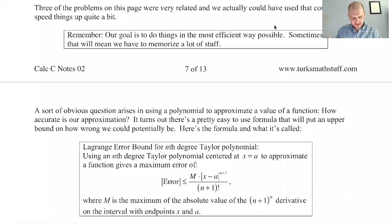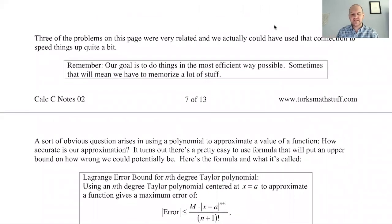All right, we're back. We're going to be on page 8 of Notes 2 of Calc C. We're talking about Taylor polynomials. So Taylor polynomials we have found. Eventually we're going to talk about Taylor series, which is why I'm stumbling over the word polynomial. Taylor polynomials, we find out, are like extensions of tangent lines.